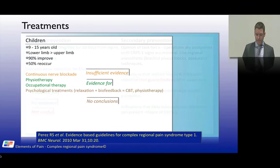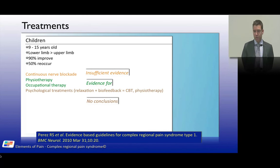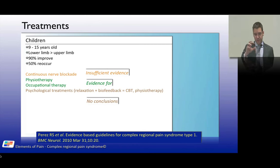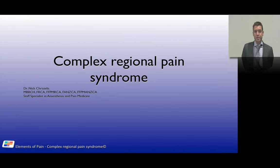Regarding CRPS in children: it occurs in young girls predominantly, typically aged 9 to 15, and it is more commonly a lower limb problem compared to adults. Around 90% of children with CRPS get better, though recurrence is possible. The key treatment for children is movement — physiotherapy and occupational therapy are paramount. Some medication such as gabapentinoids and membrane stabilizers can help reduce pain, but needles should generally be avoided in children.